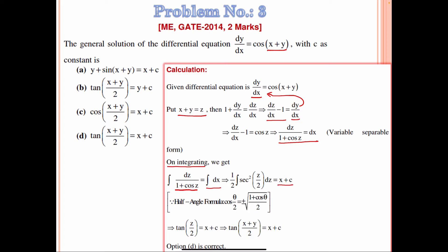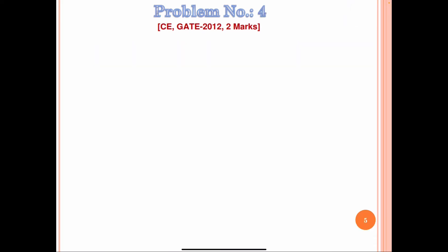Integrating this term, we get tan(z/2) = x + c. Substituting back z = x + y, we obtain tan((x + y)/2) = x + c. So option D is correct.